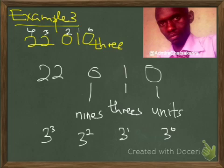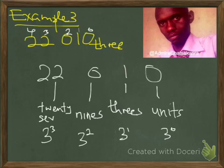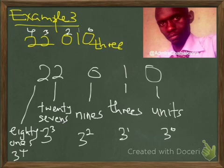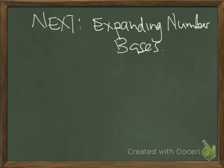The value of 2 here at 3 to the power 3 is 27, so these are 27s. The value of 2 here at 3 to the power 4 is 81, so these are 81s. It means we have 2 eighty-ones, 2 twenty-sevens, no 9s, 1 three, and 0 units.